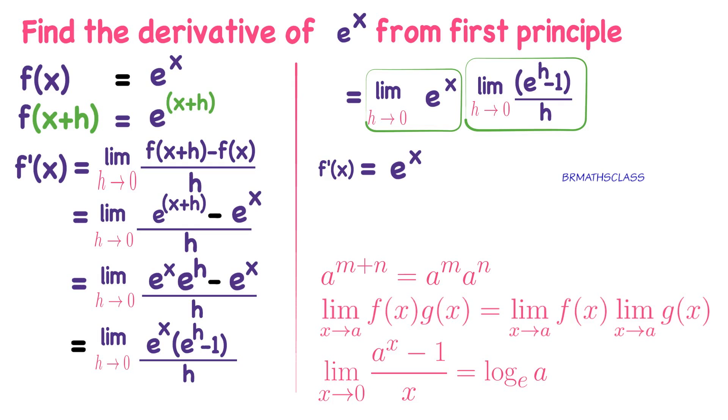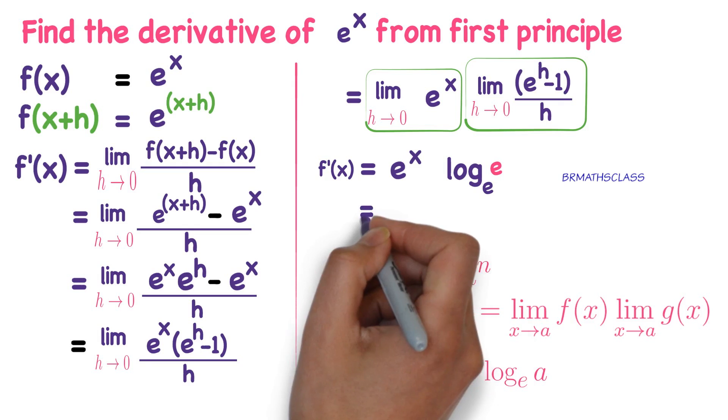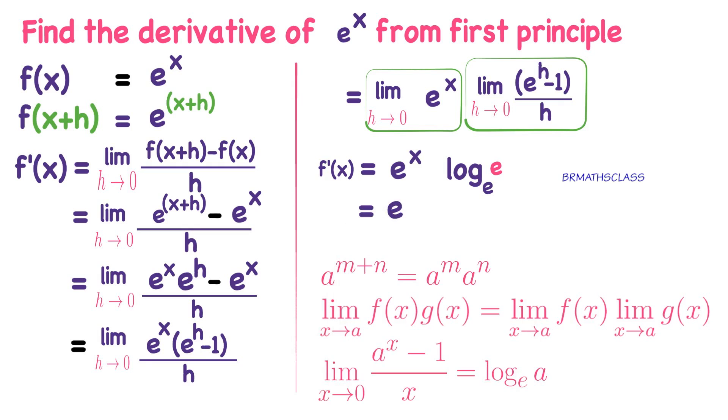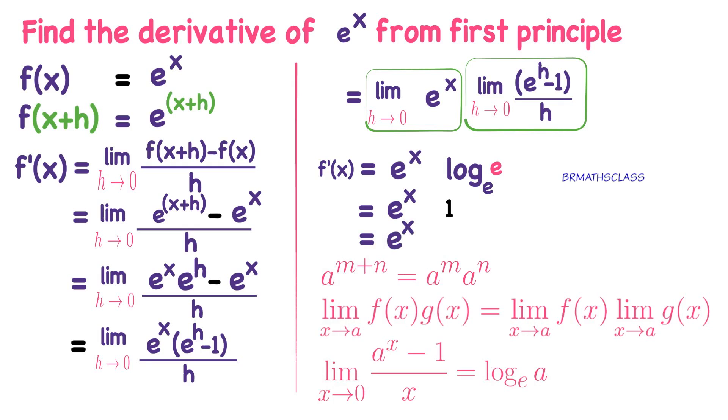In this formula, if we replace a with e, what you will get? The answer is log_e(e). So this equals e^x times log_e(e). We know from the logarithm chapter that log_a(a) equals 1. So log_e(e) is 1. So finally f'(x) equals e^x.